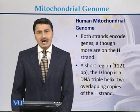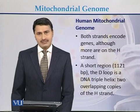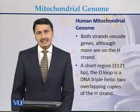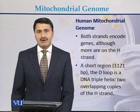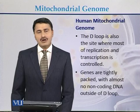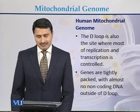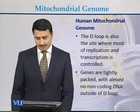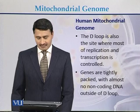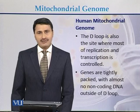A short region on the human mitochondrial genome, approximately 1100 bases in length, is called the D-loop region. This region is actually a triple helix, meaning at this point there are three strands. The D-loop is the site where most of the replication is controlled. Genes are tightly packed in the human mitochondrial genome, and there is almost no non-coding DNA outside the D-loop region.